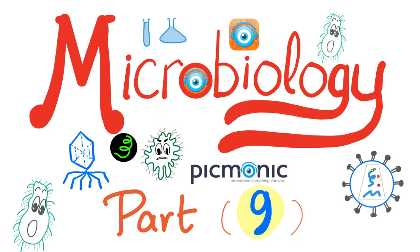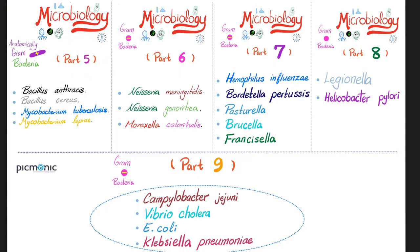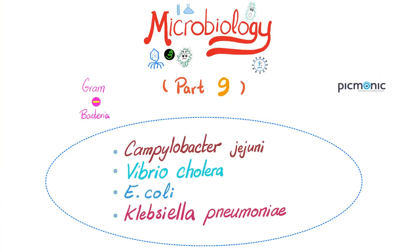Today, we're talking about some gram-negative bacteria. The first through fourth videos covered gram-positives; video five covered some gram-positives and acid-fast organisms; videos six, seven, and eight started and continued gram-negatives. Today we'll talk about Campylobacter jejuni, Vibrio cholerae, Escherichia coli, and Klebsiella pneumoniae — covering bloody diarrhea, watery diarrhea, and pneumonia.